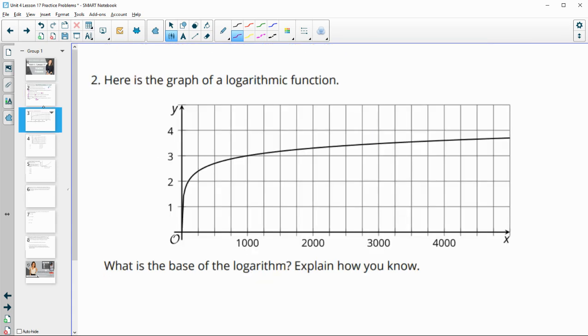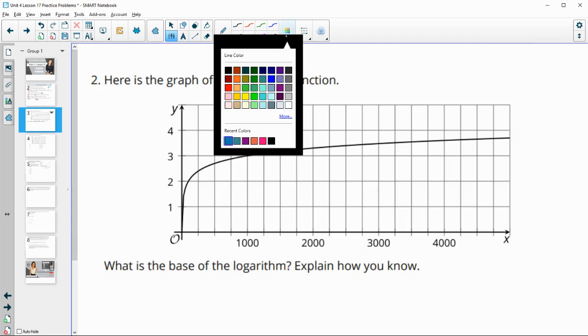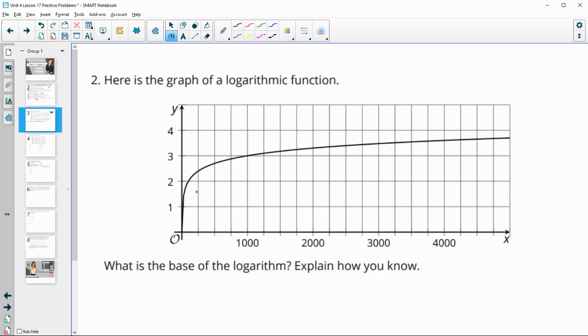Number two, here's the graph of a logarithmic function. What is the base of the logarithm and how can you tell? For this one, I kind of look to see where do I see it actually crossing an exact point. So I know that 1,000 goes with an exponent of 3. So what to the third power would give me 1,000? 10 to the third gives me 1,000. So the base of this logarithm is 10.